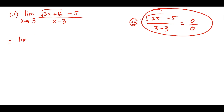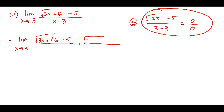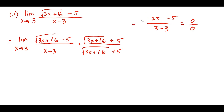The algebra we'll use is multiplying the numerator and denominator by the conjugate of the binomial in the numerator. Taking the conjugate of (square root of 3x plus 16 minus 5), we just change the sign to get (square root of 3x plus 16 plus 5). Multiplying top and bottom by this conjugate will make the limit simplify nicely, since the limit cannot be determined by substitution alone.